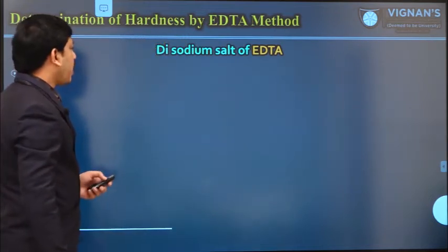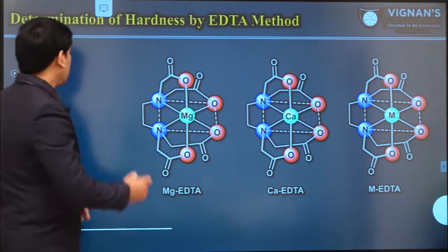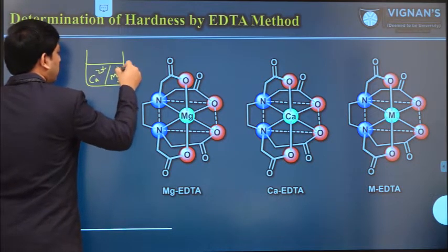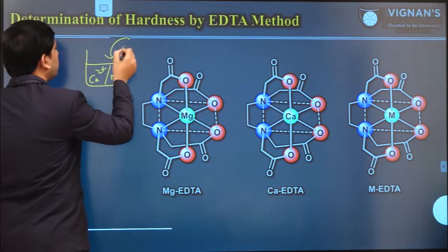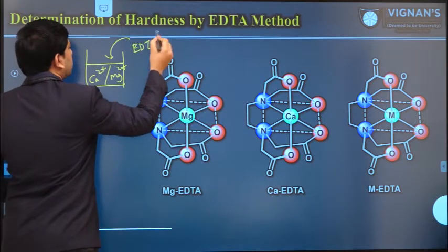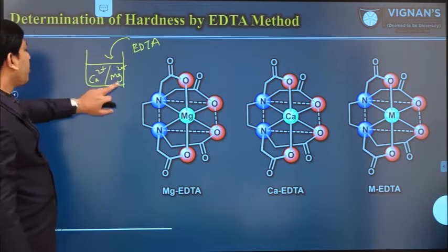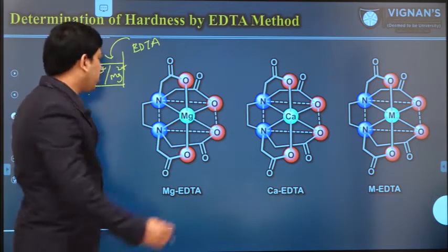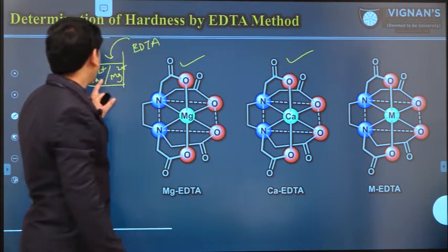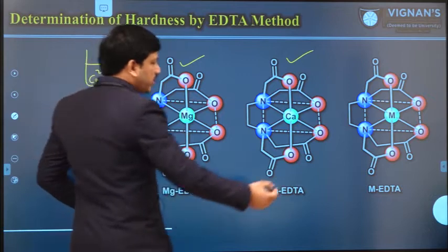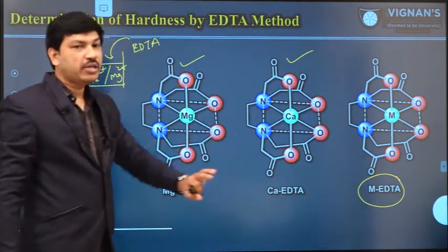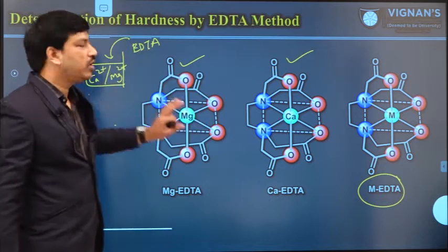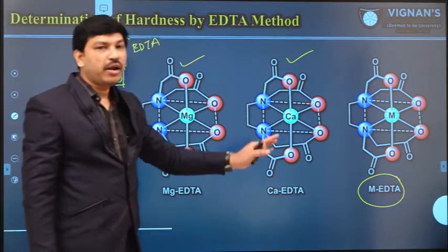Now let us see what will happen if we add this EDTA compound to the water sample. Generally, let us say this is your water sample containing some calcium or magnesium salts. If we add EDTA or disodium salt of EDTA, then the EDTA molecule immediately forms a complex with the calcium or magnesium ions, forming octahedral complexes — either a magnesium complex or a calcium complex depending on the source of the water sample.